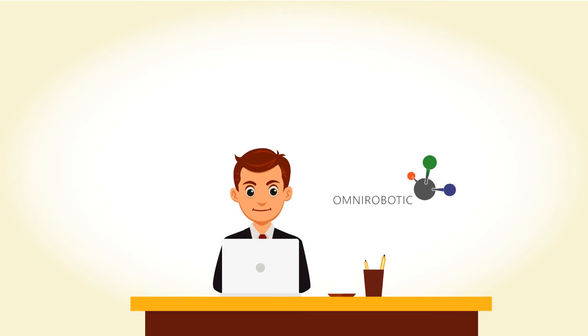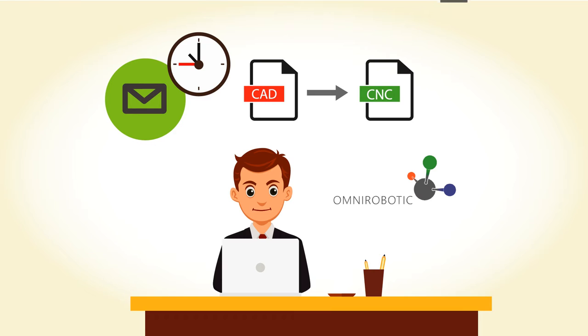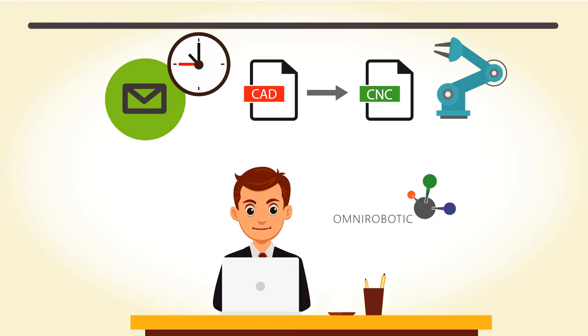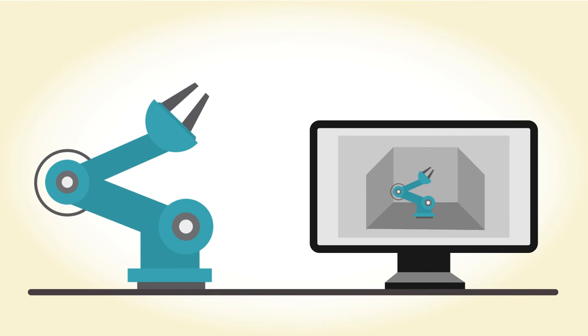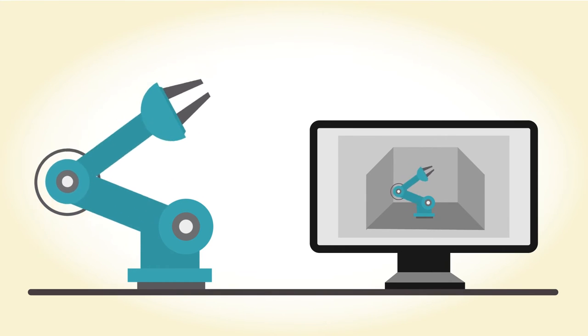Using advanced proprietary software, we can quickly convert a part CAD file into CNC or robot motion programming. Using a machine digital twin, we're able to remotely simulate your process and provide real part and feature position compensation.